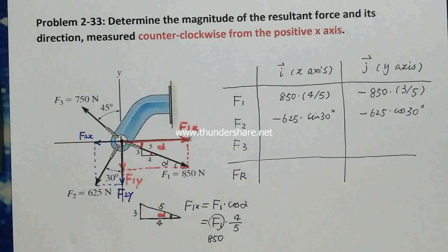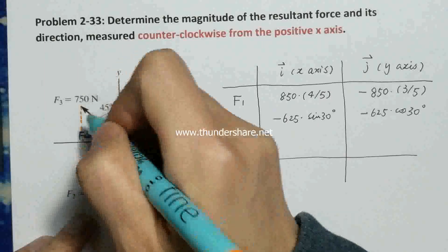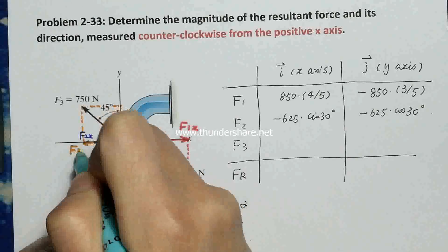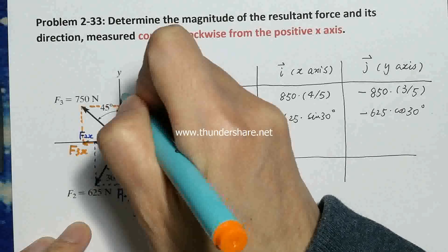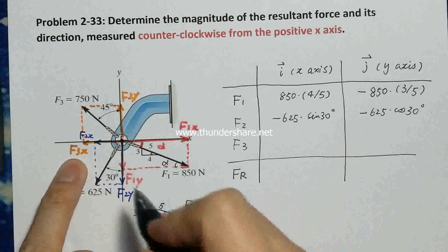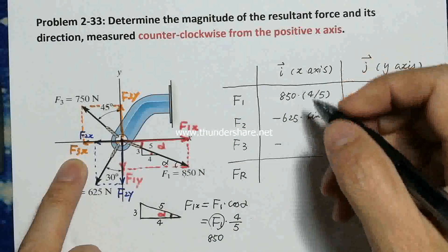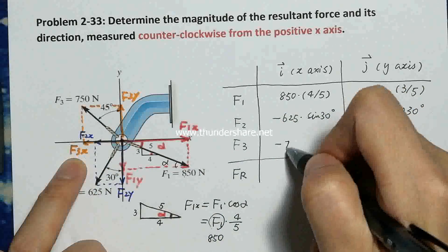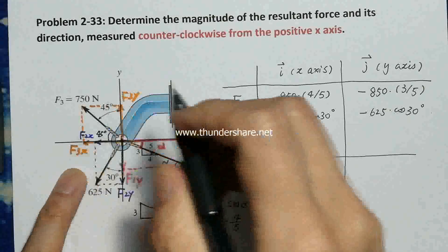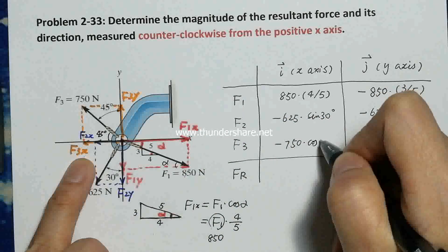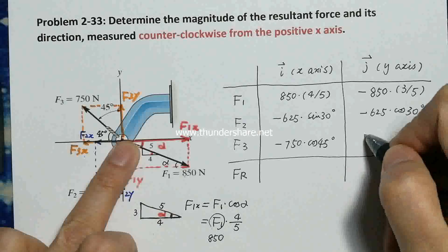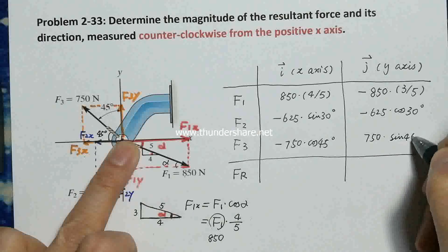Now we do F3. From the center I get F3x and F3y. For F3x, it's pointing to negative, so we put a negative sign first. The magnitude of F3 is 750. Because this is 45 degrees — and actually this is 45 degrees as well — F3x equals negative 750 cosine 45 degrees. F3y is positive, so it's 750 cosine 45 degrees.